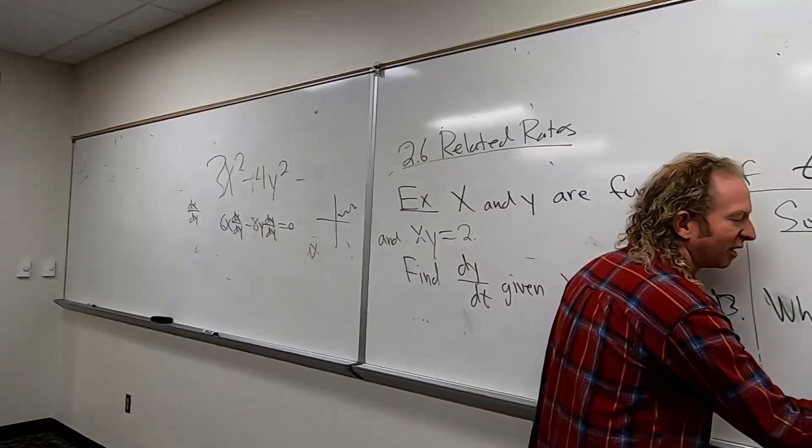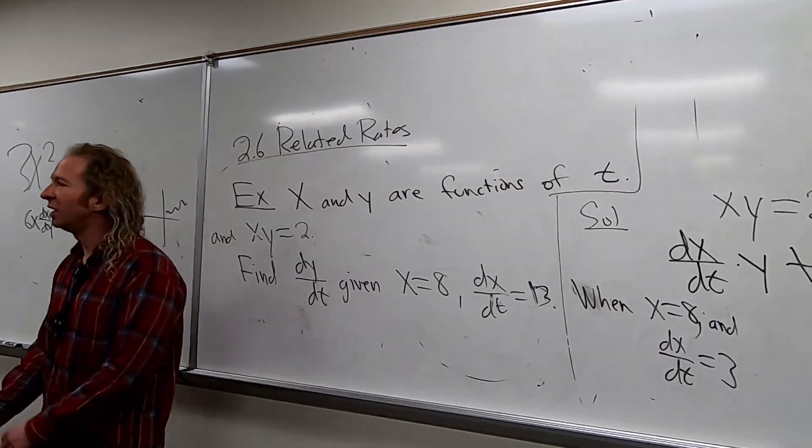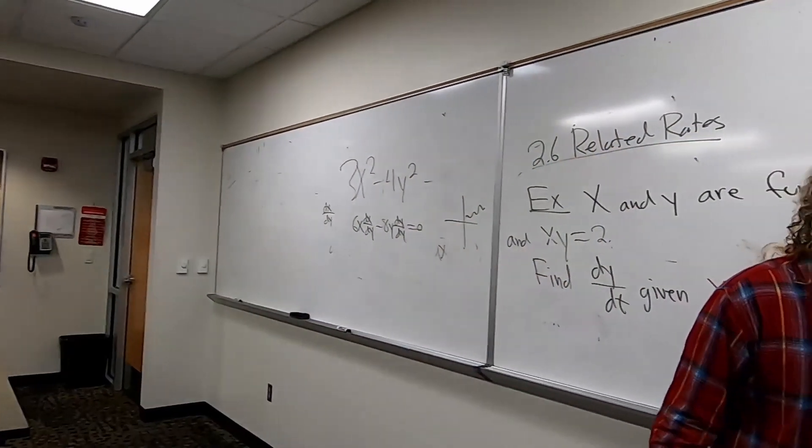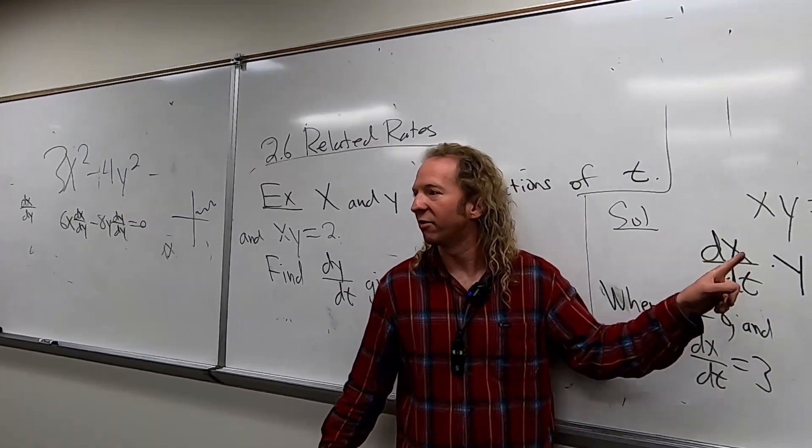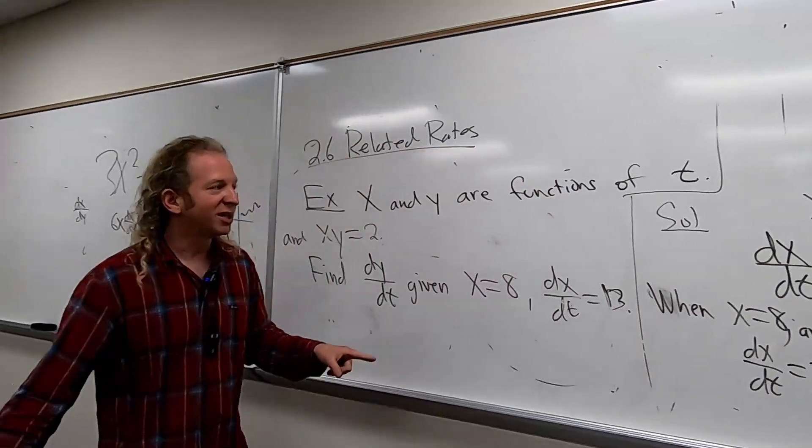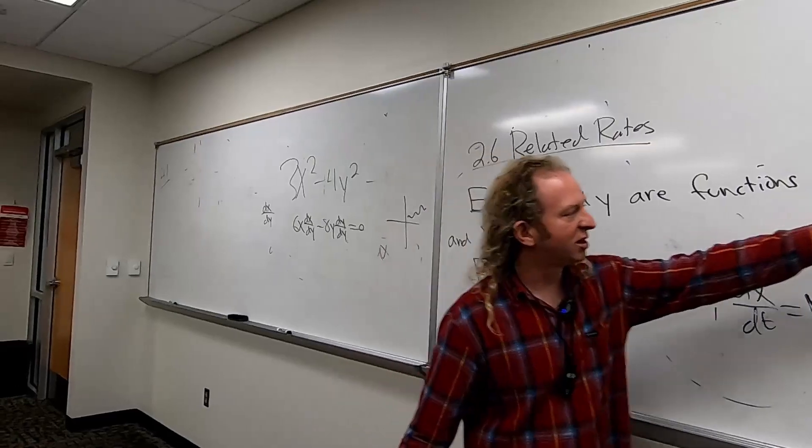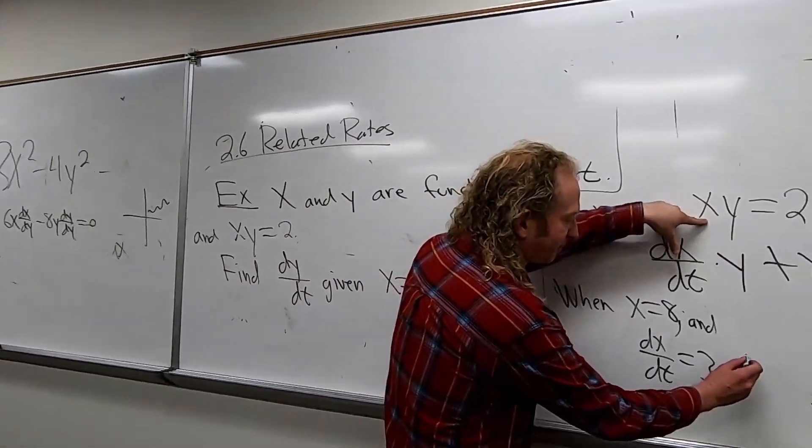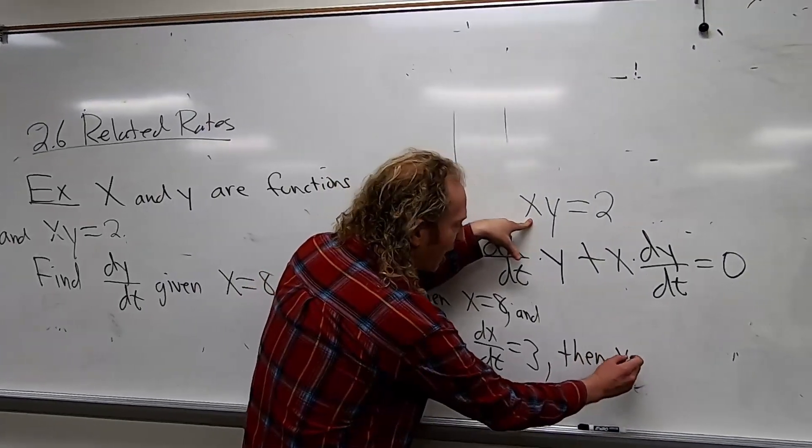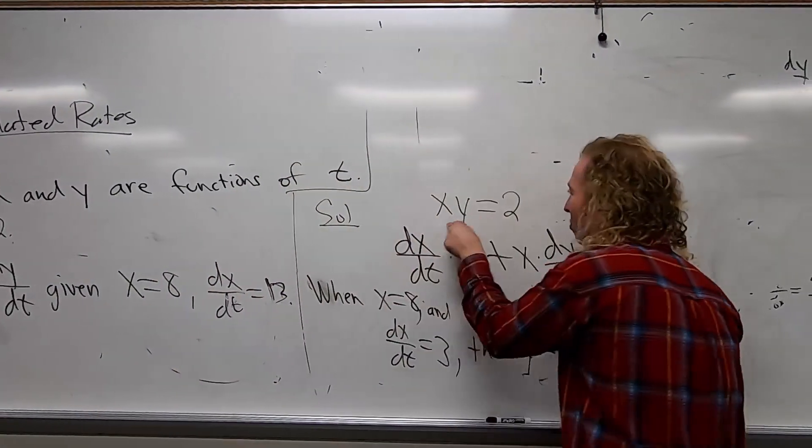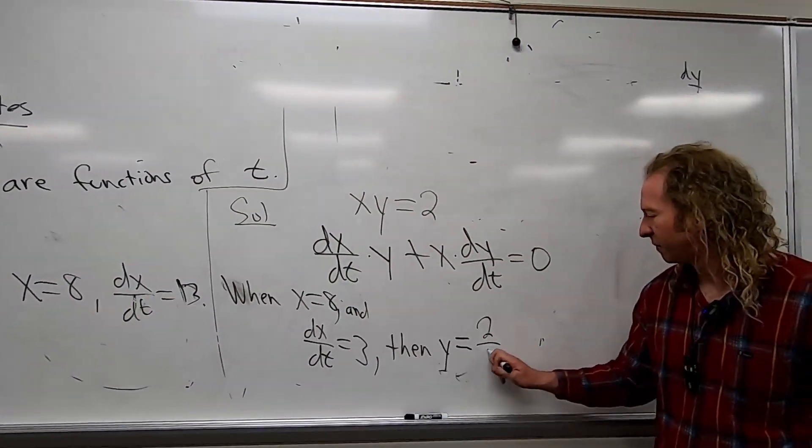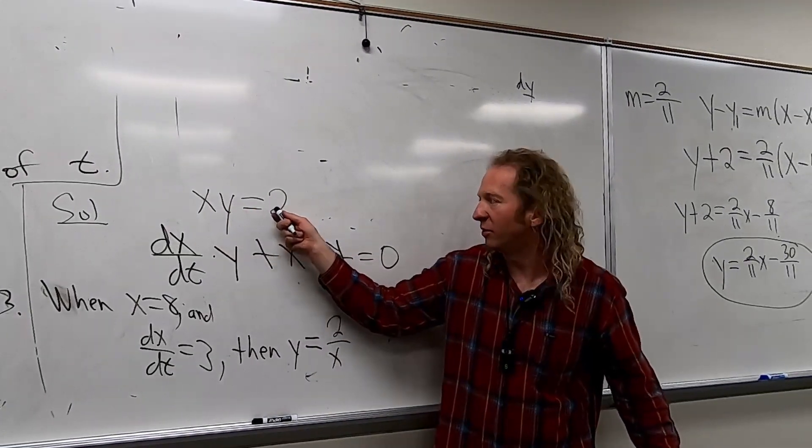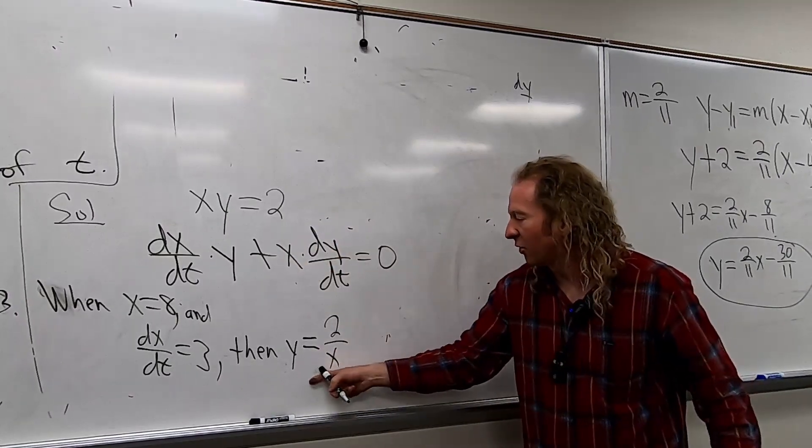So and what are we missing? If we're looking for dy/dt, what's missing? Like we have x, we have dx/dt. Which one don't we have? The y. The y. So I guess we can use this to find y, right? So then y equals 2 over x, right? You could divide this by x, right? You could divide this by x, so that would be?